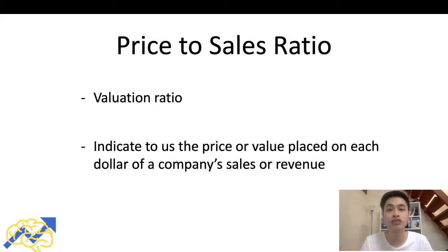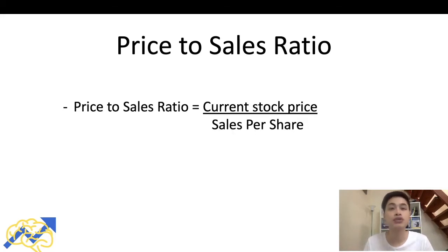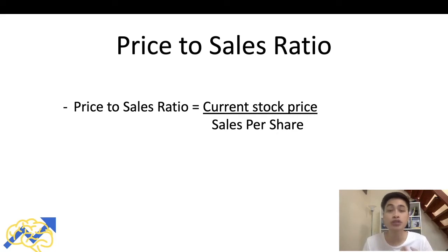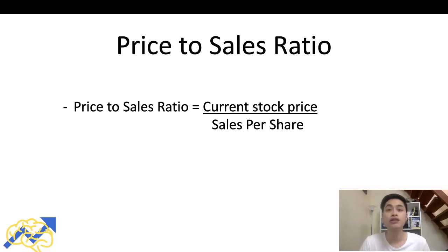Let's take a look at the price-to-sales ratio formula. To calculate it, we take the current share price of the company divided by its sales per share. We can find the current share price by doing a quick Google search of the company's ticker symbol. To calculate sales per share, we first find the sales revenue of the company and then divide it by its total shares outstanding. We'll go through this process using live examples later in the video.